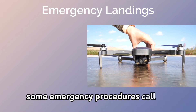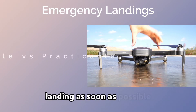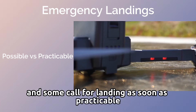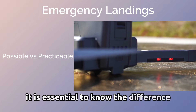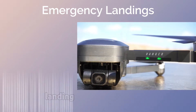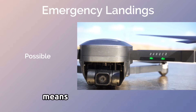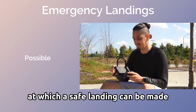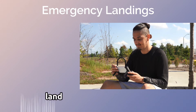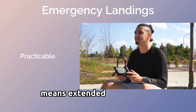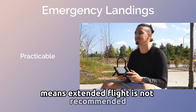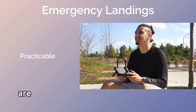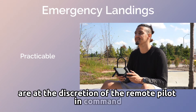Some emergency procedures call for landing as soon as possible and some call for landing as soon as practicable. It is essential to know the difference. Landing as soon as possible means land at the first site at which a safe landing can be made. Land as soon as practicable means extended flight is not recommended, and the landing site and duration of flight are at the discretion of the remote pilot in command.